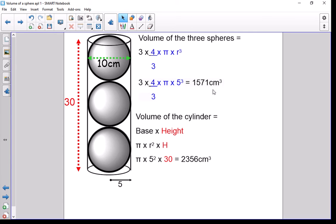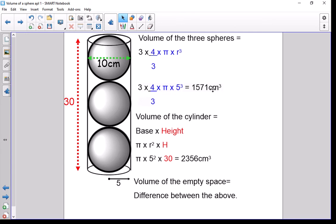Now the last thing they may ask you is how much empty space is inside that cylinder. What you need to consider is that the volume of the empty space would be the difference between the top two answers: the volume inside the cylinder take away the volumes taken up by the spheres.